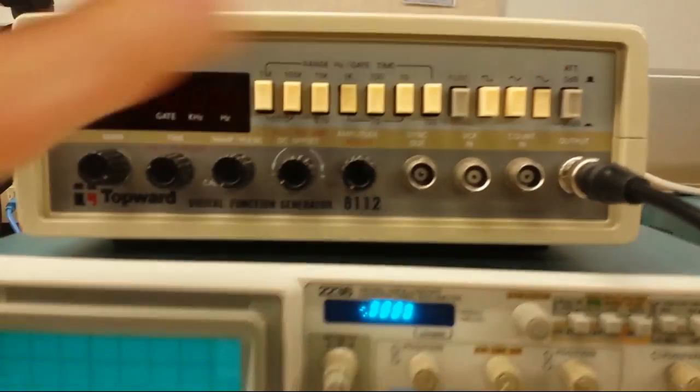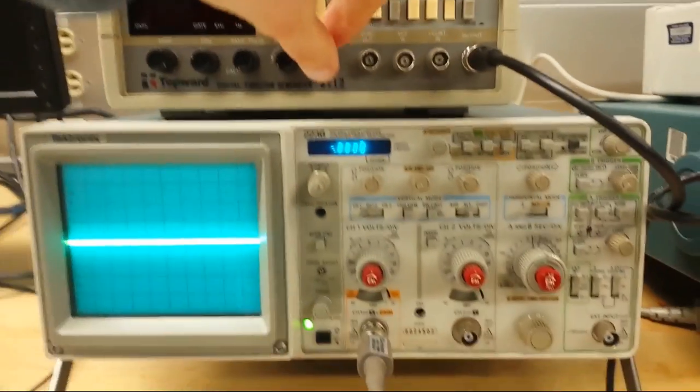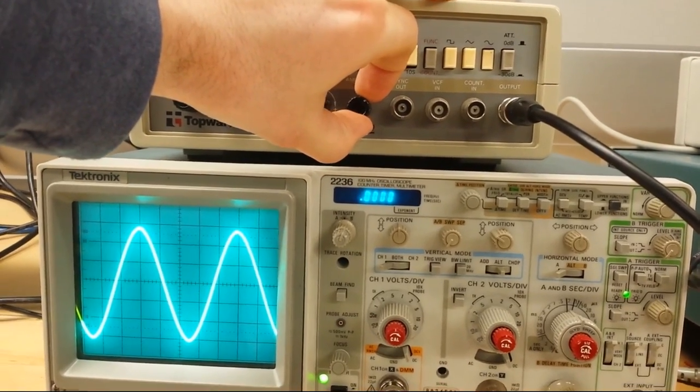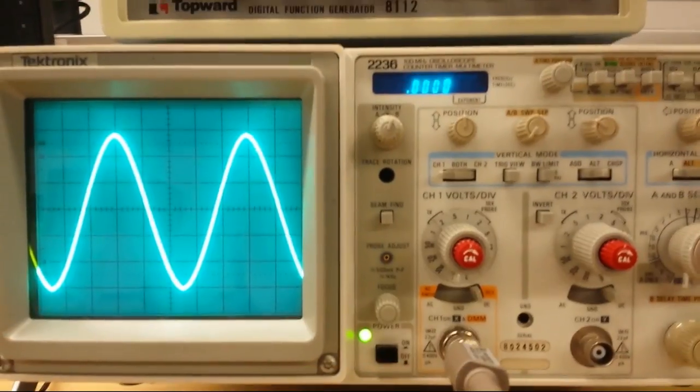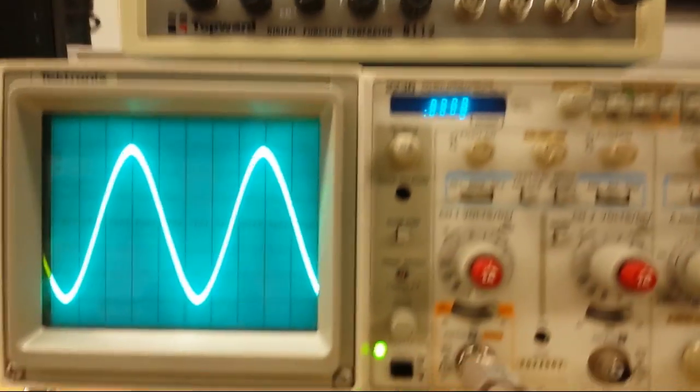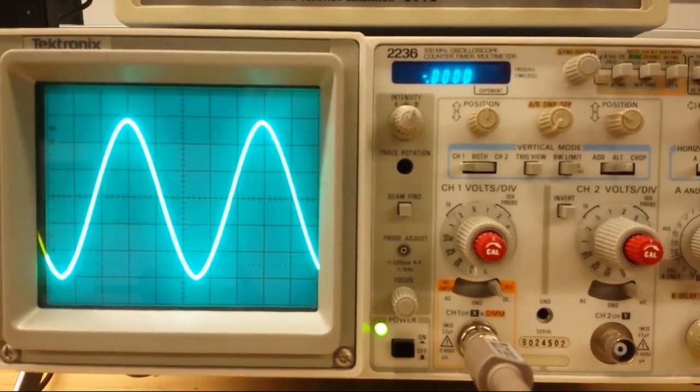So what we're going to do is we're going to go to the function generator up here, and we're going to turn it on. And as if we back up just a little bit, as we turn it on, there you go. We get a wave. And you can see that we're processing the wave, the sine wave from this function generator, into the oscilloscope.